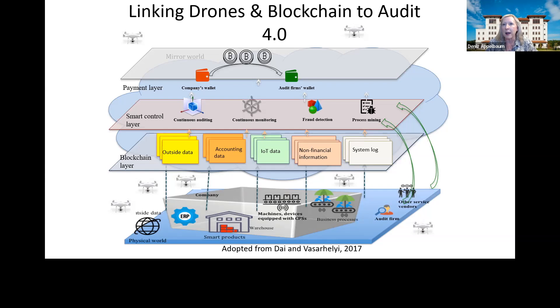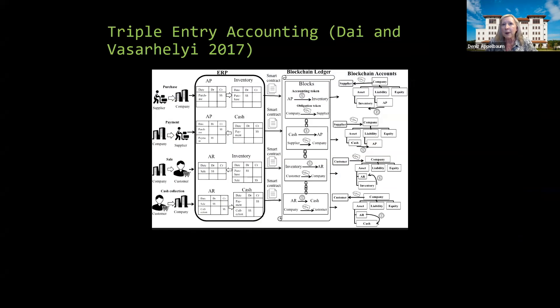This is the Vassarelli paper — a very amazing illustration about how we have a third ledger. We have two separate parties, a supplier and a company or a company and a customer, and how the blockchain ledger really serves as a neutral recording of the transaction. Each company or party still has their own general ledger, but we don't have to work so hard as auditors to validate or verify the transactions.